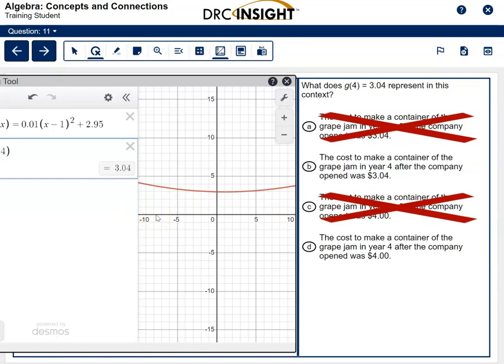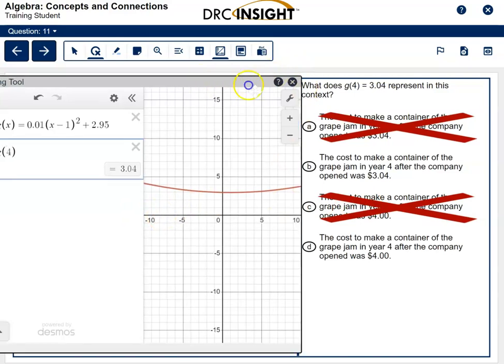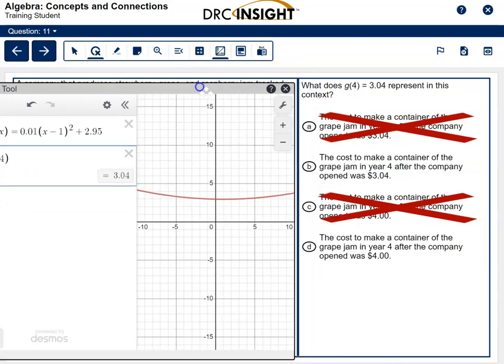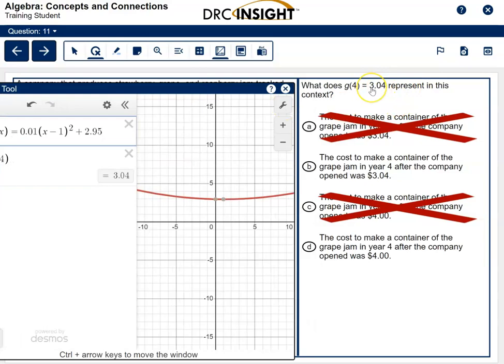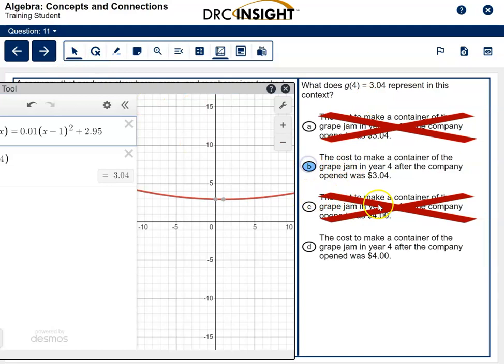B says $3.04. Well, that is what it says, $3.04. And then D says $4. Well, there's no $4 here. There is no $4 in this answer. So the correct answer was B.